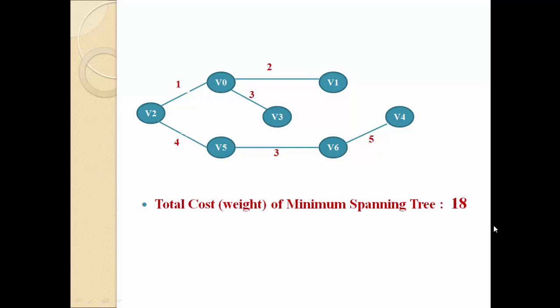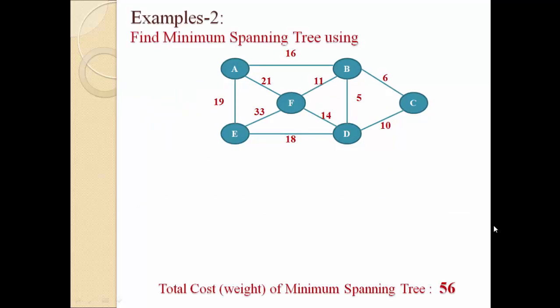Adding all the edge costs gives a total cost of 18, which is the total cost of this minimum spanning tree. For the second example, suppose we have a graph with six nodes and a number of edges. As per Kruskal's algorithm, we identify the edge with minimum cost. Edge B to D has a cost of 5, which is the minimum, so we select B to D as our first edge.